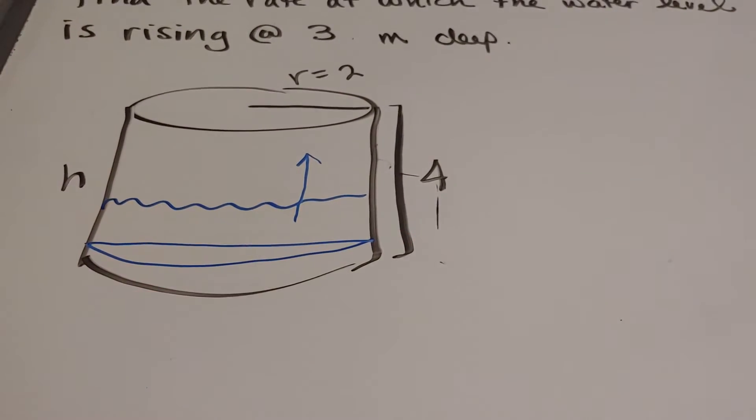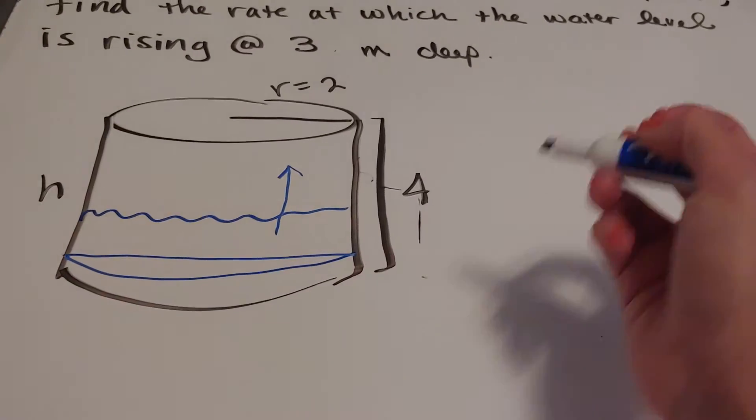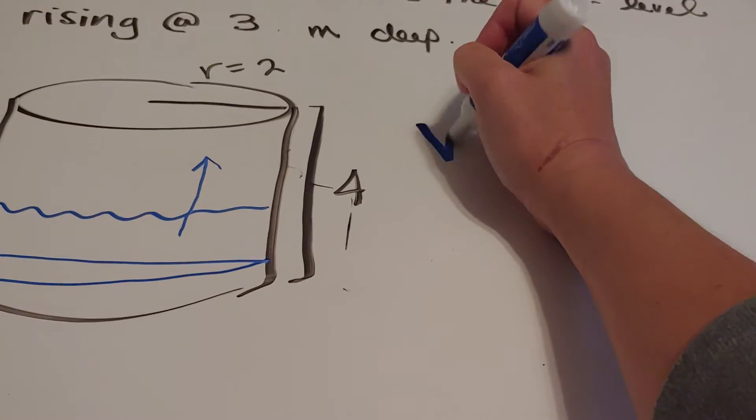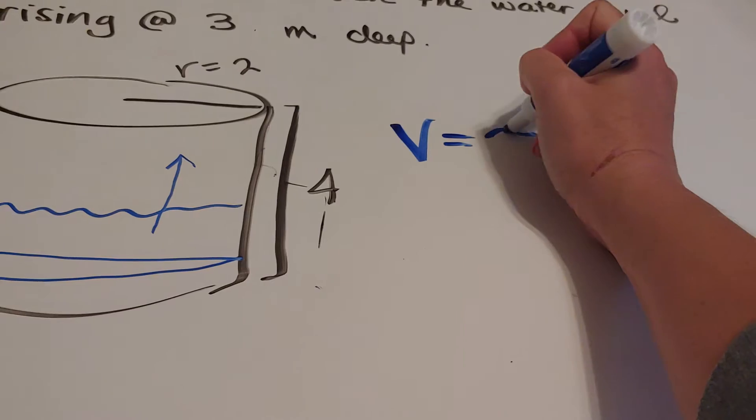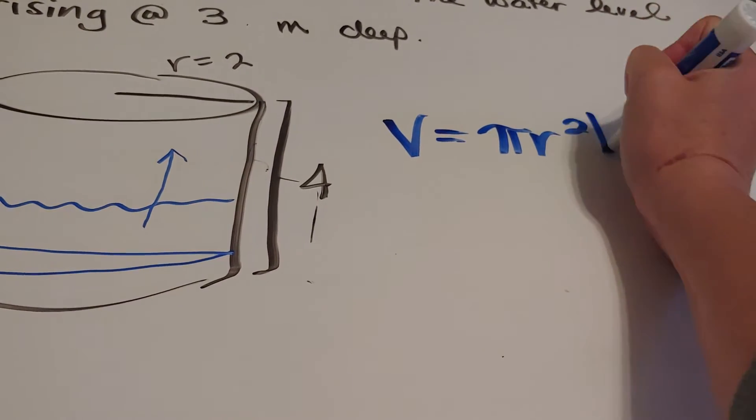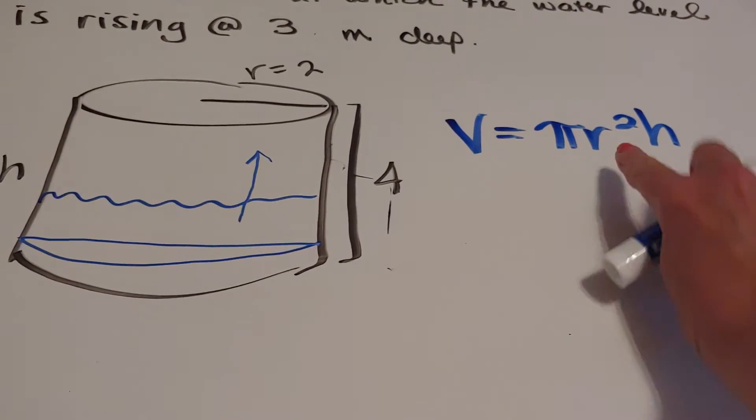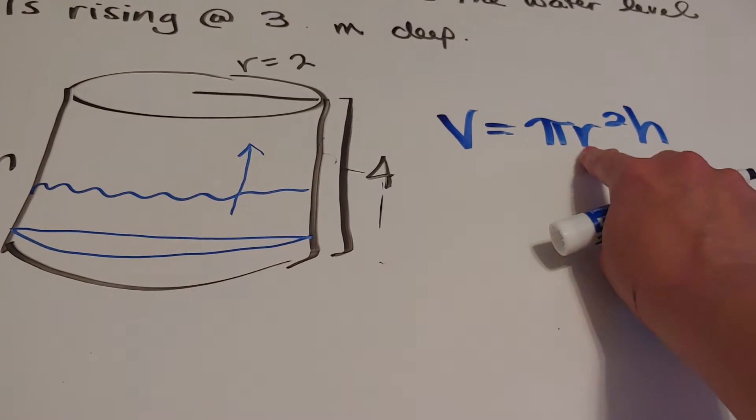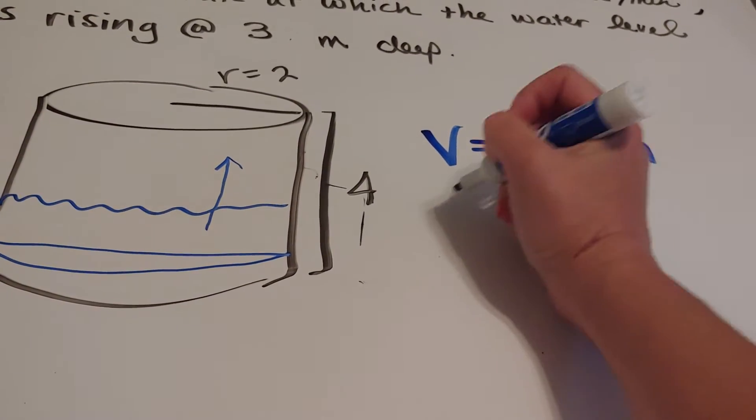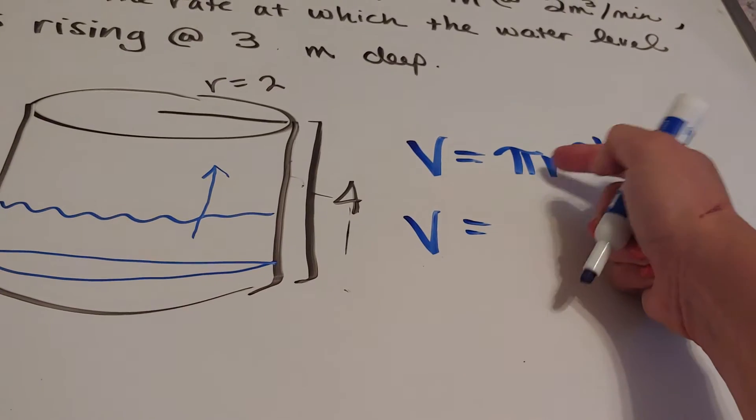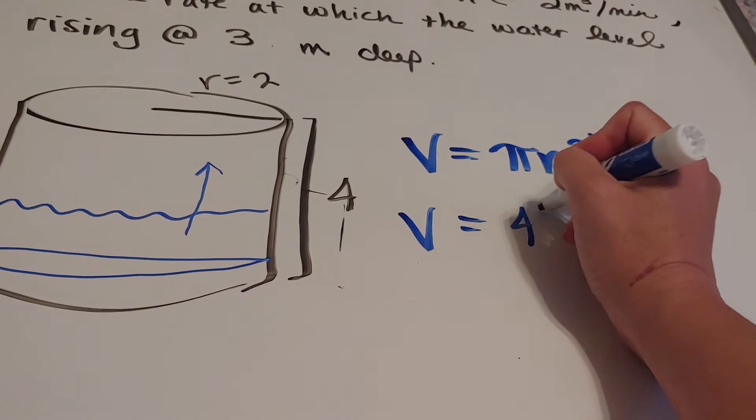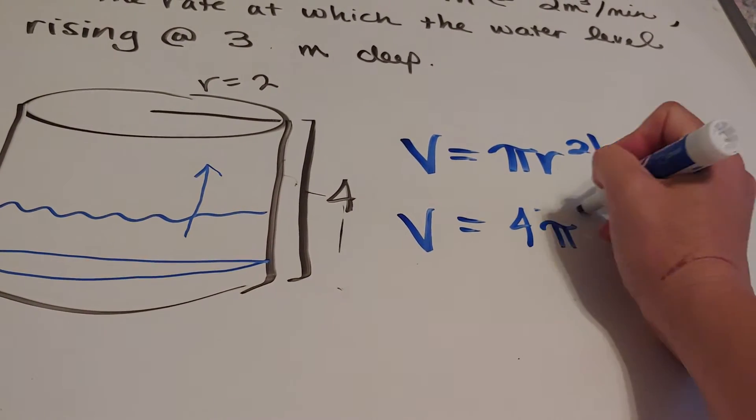So what happens is that for cylinder problems, we're going to talk about the volume of a cylinder, which is pi r squared h. However, the radius is actually never going to change, so we're going to put that 2 in. So I'm going to have pi times 2 squared, which is 4 pi h.